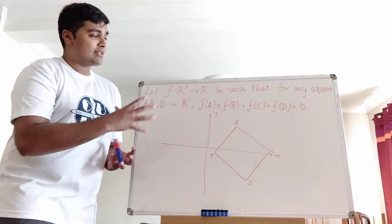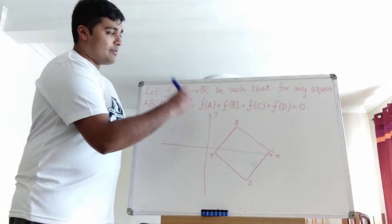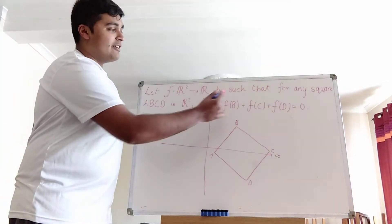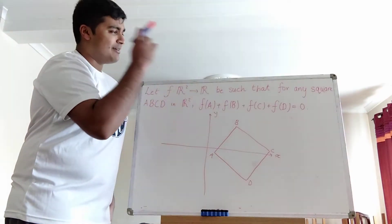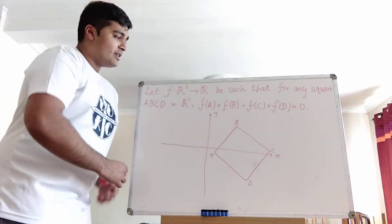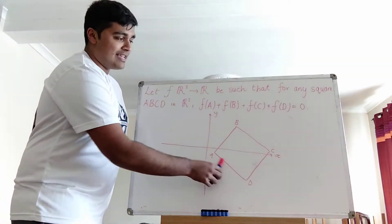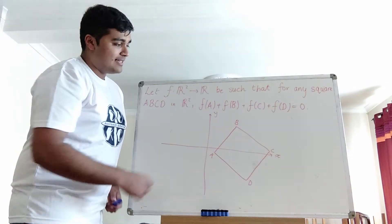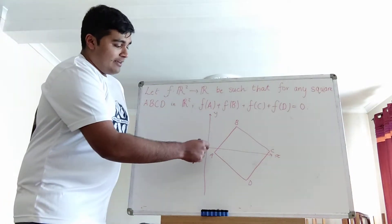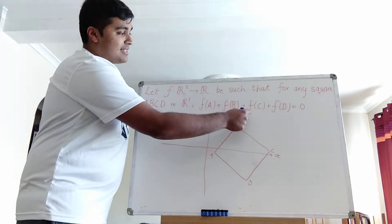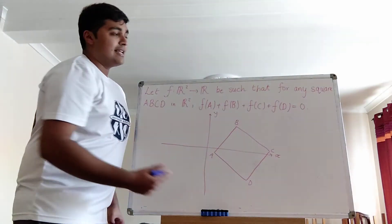Say a, b, c, d, on the xy-plane, it has this property that when we evaluate the function at each of the vertices and add that sum up, we always get zero. So for example, here I've got the xy-plane, and I've taken some random square and labeled the vertices a, b, c, d. Then if I do f(a) plus f(b) plus f(c) plus f(d), I always get zero.